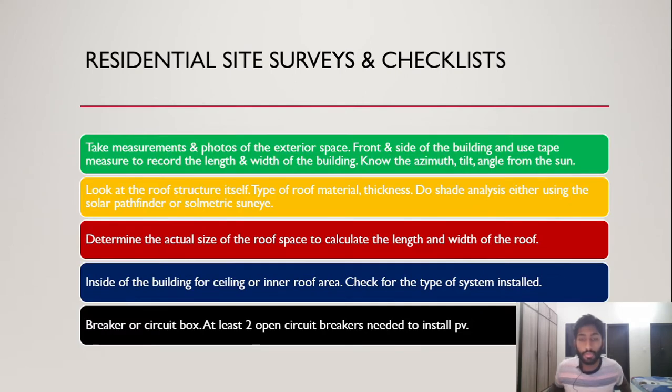When it comes to site surveys or residential checklists, there's some key things you need to do. First is take measurements and photos of the area and surrounding buildings - front side, back side - just to have a good idea. Use a tape measure to record the length and width of the roof space to know how long it will take to accommodate solar panel installation. Know the azimuth angle and direction that the roof is facing, whether it's 180 degrees or 170 degrees. Based on that you can also calculate the tilt angle from the sun.